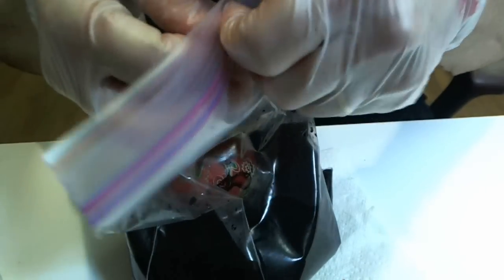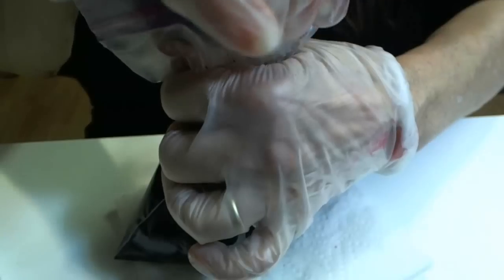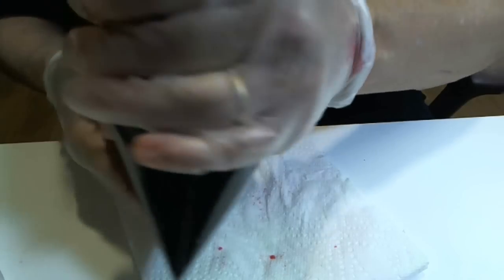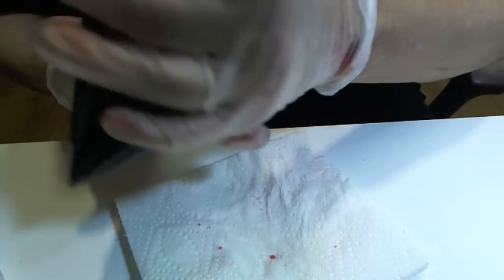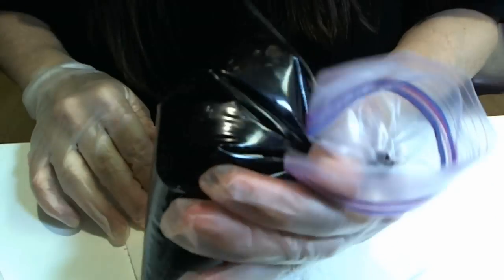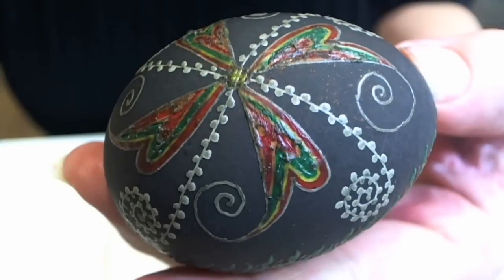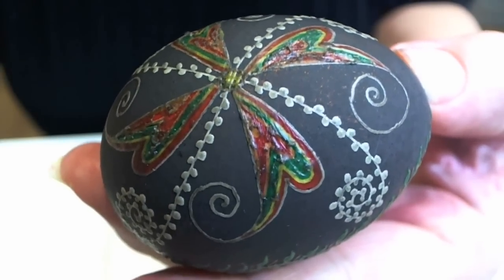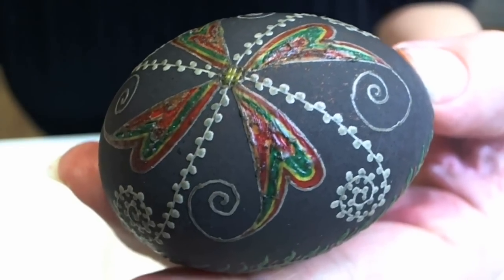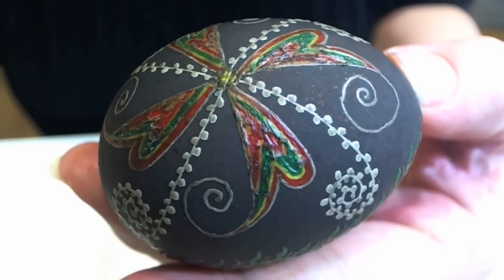Squeeze out as much air as possible. Take the bag and twist and just let the dye do its job. The final dye, which was black, has been done. Now it's time to remove the wax.